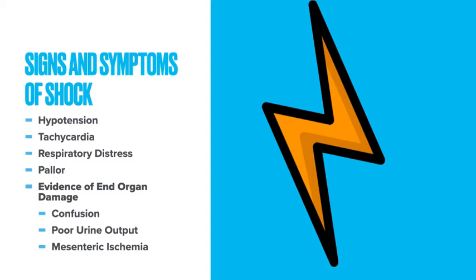Shocked patients are going to present in a multitude of ways. The most common symptoms and signs are usually tachycardia, perhaps confusion, and poor urine output. If you haven't specifically asked for input-output monitoring, this might not be recorded. It's important to understand that shock often gets conflated with hypotension. However, they don't always go together — you can have a shocked patient who is not necessarily hypotensive, and you could also have a hypotensive patient who is not shocked.